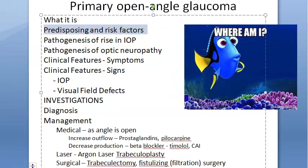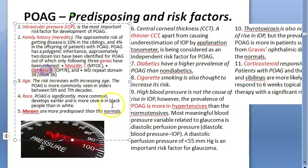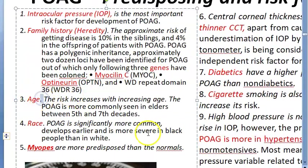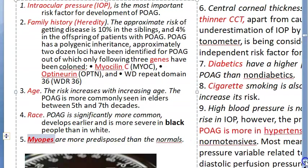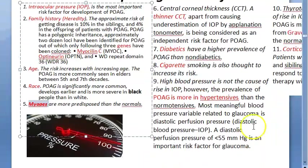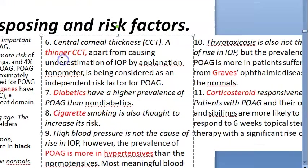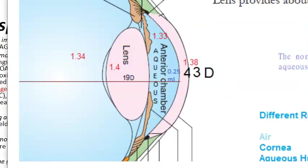Predisposing and risk factors: increased intraocular pressure, family history with genes like myocilin and optineurin, advancing age (50–70 years), race (higher in Black populations), and myopia. Myopic people have more risk of developing glaucoma after age 50–70. Thin central corneal thickness is also a risk factor for developing POAG.